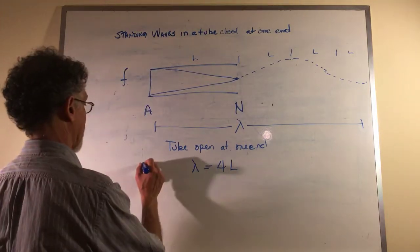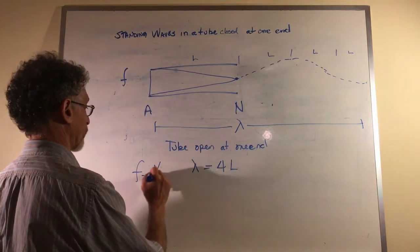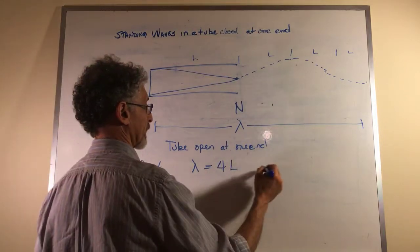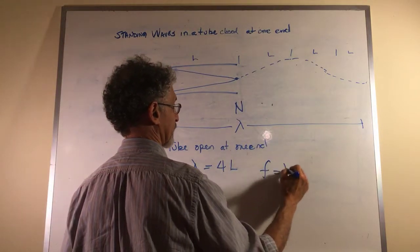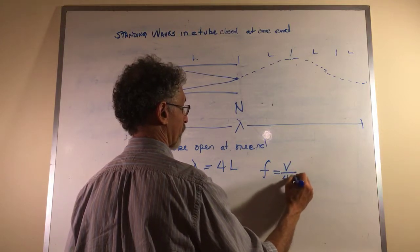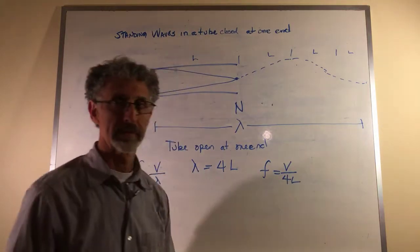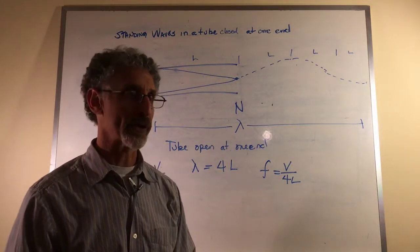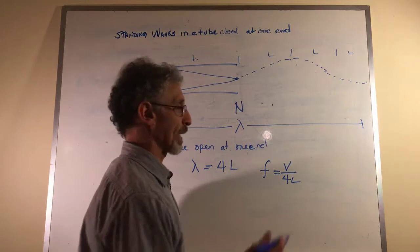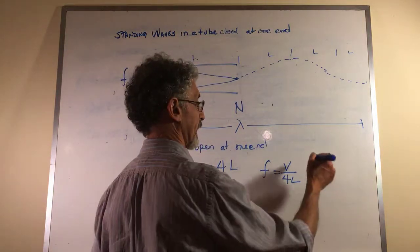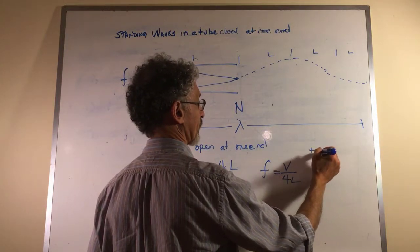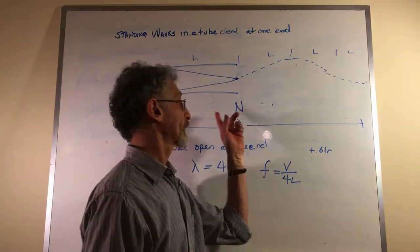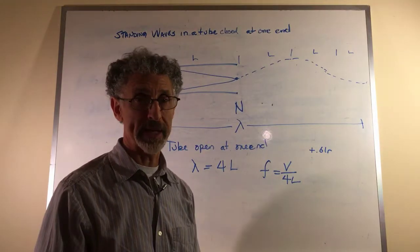So if we go back to F equals V over lambda, for a tube open at one end, frequency equals V over 4L. That's the simple formula. If we want to be accurate about this, we have to add an end correction, 0.61R, but only once, because we only have one open end.